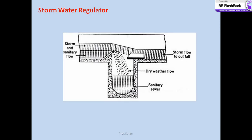The last appurtenance is the storm water regulator. Whenever there is a combined discharge from storm and sanitary flow during rain with high discharge, storm water along with sanitary sewage starts to flow in. By providing an adjusting weir, some of the water may be controlled — part of the storm water may directly go to the outfall or be discharged into the river, and what remains would be the dry weather flow, also called sanitary flow. These are the different devices or appurtenances used for maintenance, repair, and easy functioning of our sewerage system. I hope you have understood the discussion, and see you later with basics of sewage treatment.